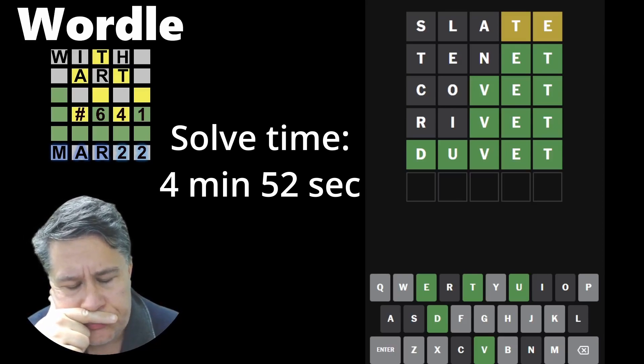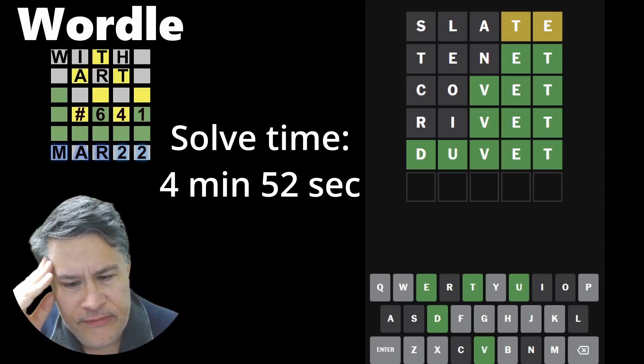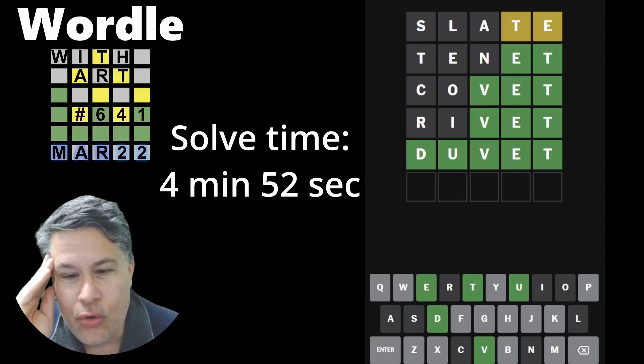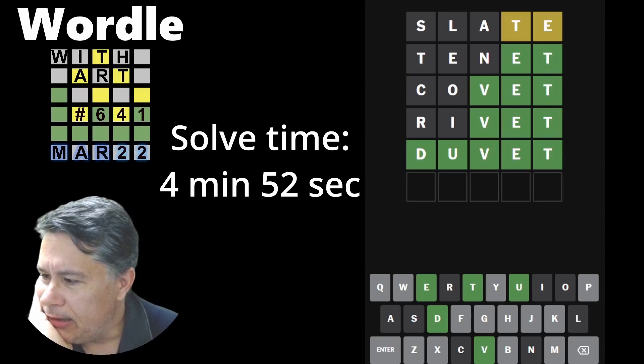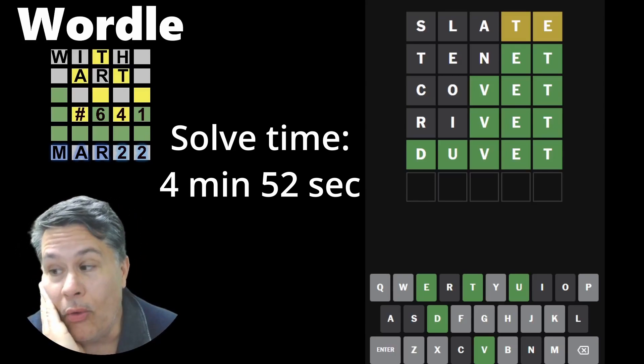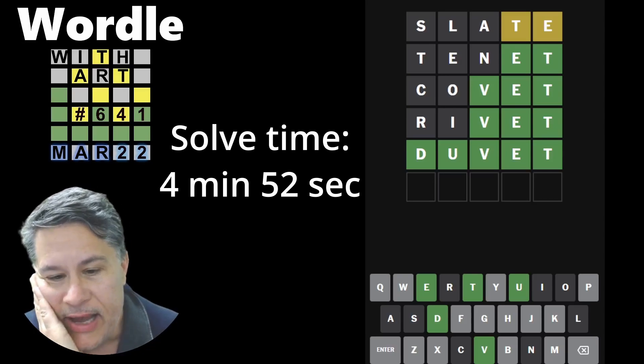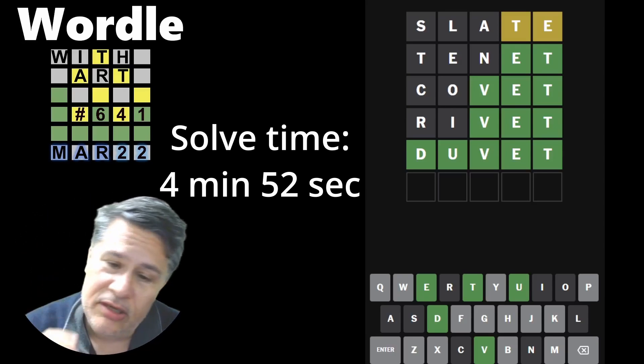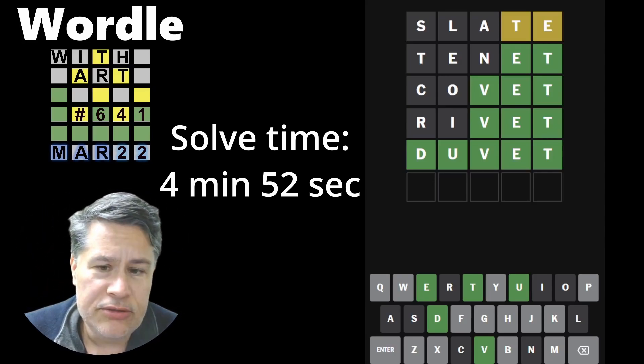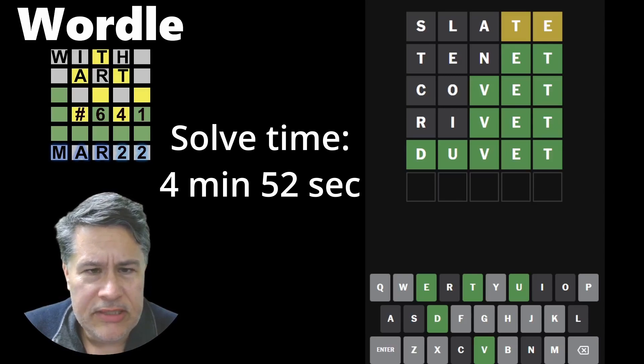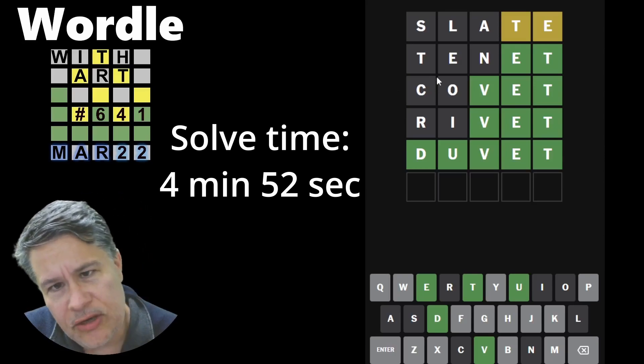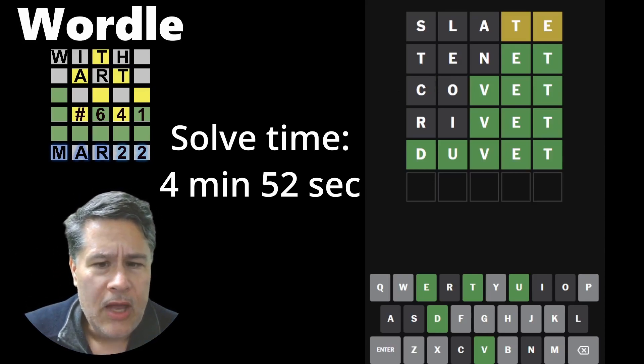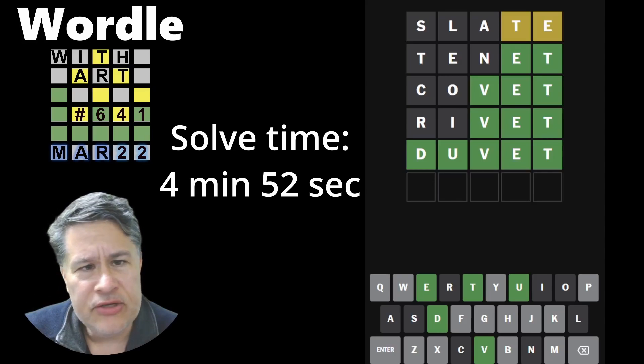I guess what I could have done better to get it at least in four would have been to say, all right, you've got Covet, Rivet, and Duvet. And I easily could have done, I don't know, honestly, I could have just done Score, something simple like Score, and that would have revealed whether it was the Covet or the Rivet. And if it was neither of those, we could have gone with Duvet. So I could have gotten it for. I'm really not upset, guys. There's no need to get pissed off the way I have been. It's just, it's a fun game. I enjoy playing with you guys. I do. And there's just no reason to be a jerk and go nuts.